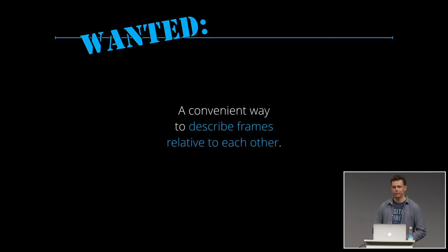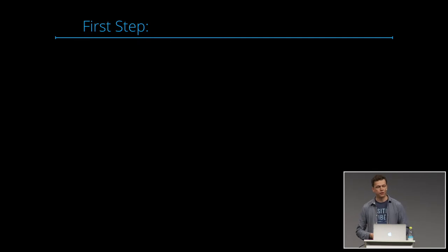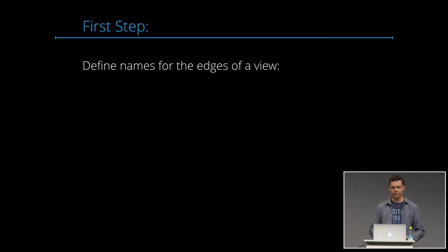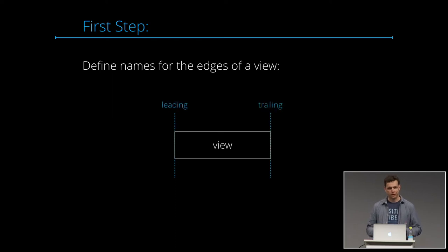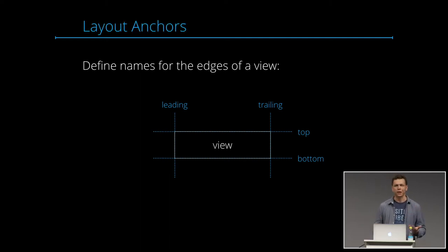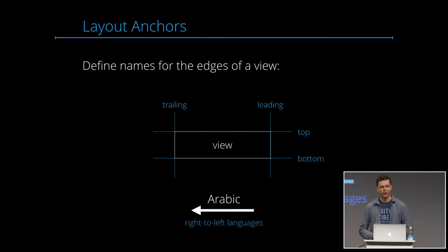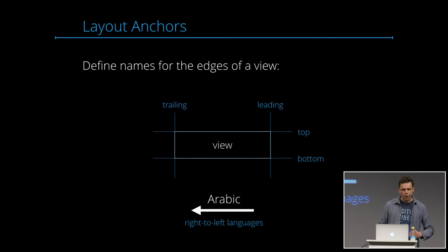In order to describe frames relative to each other, we need to find names for the edges of a view. We define the leading edge, trailing edge, top, and bottom edge — we call these layout anchors. Why leading and trailing instead of left and right? There are some languages that read right to left, like Arabic, and user interfaces should always follow the direction of the local language. As developers, we don't want to think about language specifics, so we use leading and trailing. For Arabic, trailing is on the left and leading is on the right; for English and other left-to-right languages, it's the other way around.